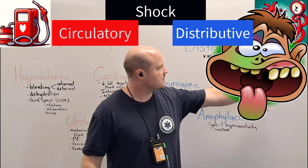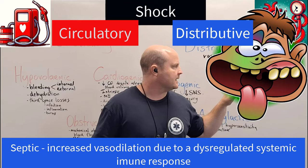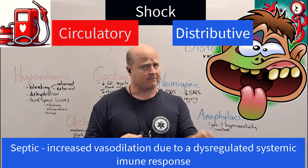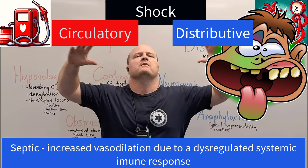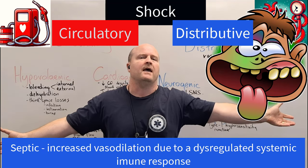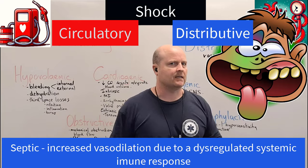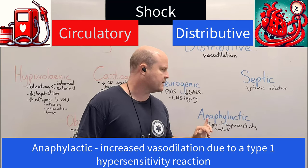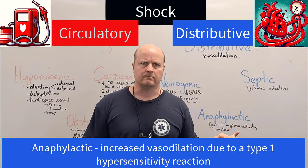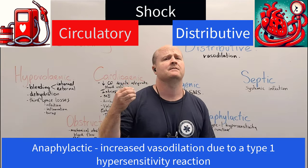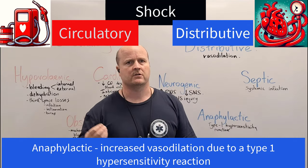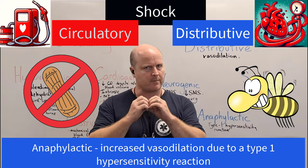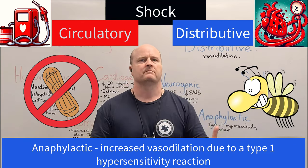Septic shock is where we get a systemic infection — our body's response to an infection goes system-wide and we get massive vasodilation. Then anaphylactic shock, which is a type 1 hypersensitivity reaction. The person has a hypersensitivity reaction to something like peanuts or a bee sting, and we get a massive amount of vasodilation — same problem.